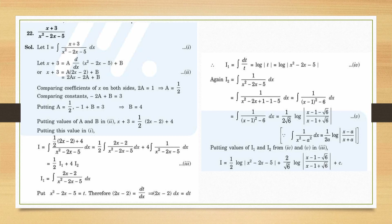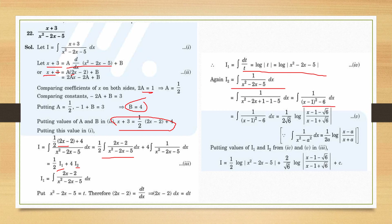Question 22: linear upon quadratic. Write x + 3 = A·(2x − 2) + B. Equating: 2A = 1 gives A = 1/2, and −2A + B = 3 gives B = 4. Split into (1/2)·I₁ + 4·I₂. For I₁, put denominator = t, giving log|t| = log|x² − 2x − 5|. For I₂ (1/(x² − 2x − 5)), complete the square: (x−1)² − (√6)². Apply formula (1/2a) log|x−a/x+a| with a = √6 to get the final answer.